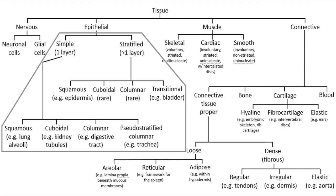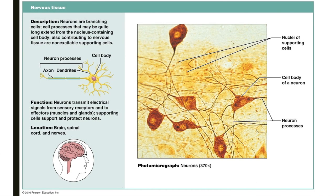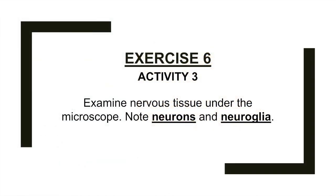Nervous tissue is made up of two major cell populations: neurons and neuroglia. Neurons are highly specialized cells that receive stimuli and generate electrical signals sent throughout the body. The neuroglia are special supporting cells that protect, support, and insulate the more delicate neurons. Nervous tissue is found in the brain, spinal cord, and nerves. In Exercise 6, Activity 3, you'll examine nervous tissue under the microscope. Be sure to identify the long, branching neurons as well as the smaller, more abundant supporting cells.